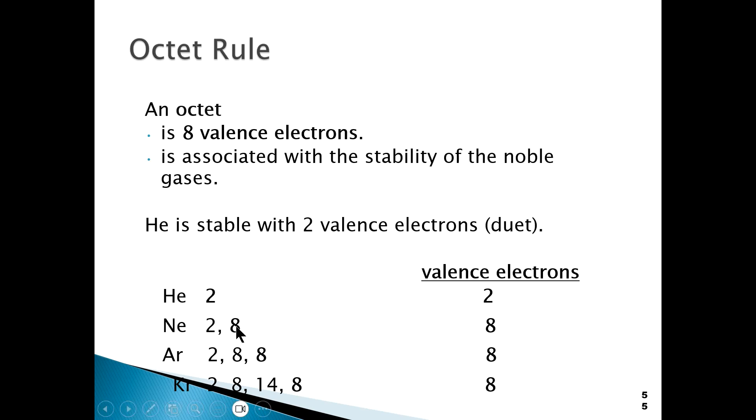With the exception of helium. Helium is the only element which does not have eight valence electrons. It has only two, but that also confers stability.